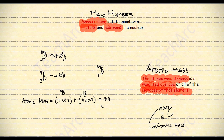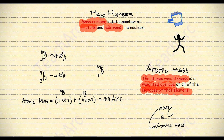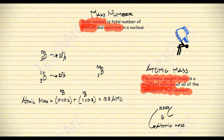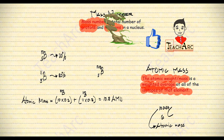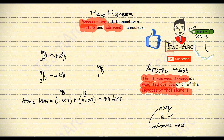We can use atomic mass unit, or AMU, as the unit for mass number and atomic mass. Check the description below to learn more on how to compute the number of electrons, protons, and neutrons of an atom. Keep solving, and I'll see you next time — don't forget to subscribe to our channel for more videos!